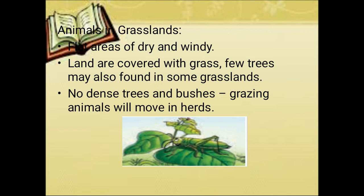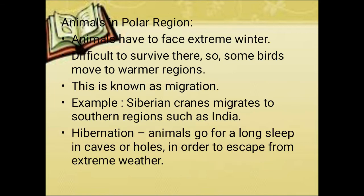The animals must graze in a herd manner so as to avoid the loss of water, since there are not many trees — they are not dense. For example, how does the grasshopper adapt? It is green in color like that of a leaf. It also has long hind legs in order to hop easily, and short forelimbs in order to hold its food.